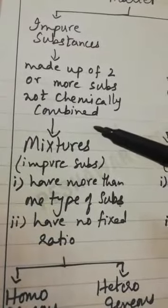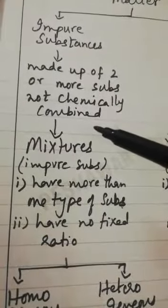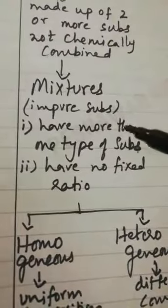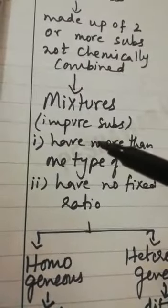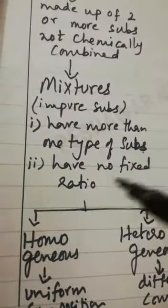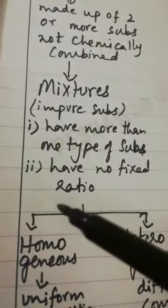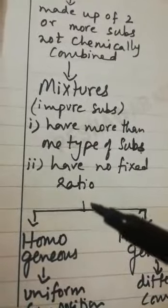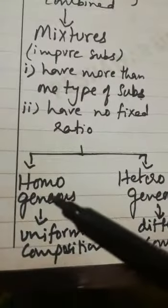Mixtures are examples of impure substances. The main characteristics are that they contain more than one type of substance and they have no fixed ratio between their components.